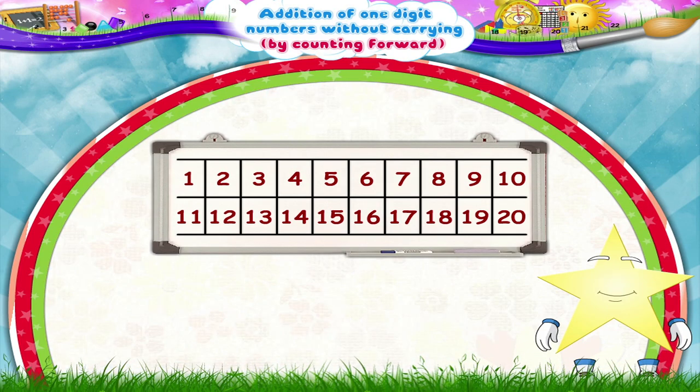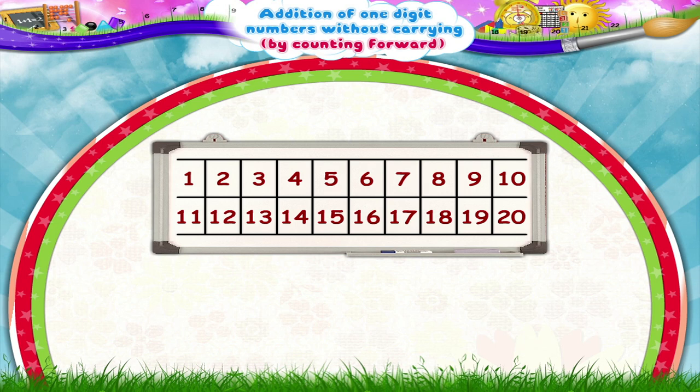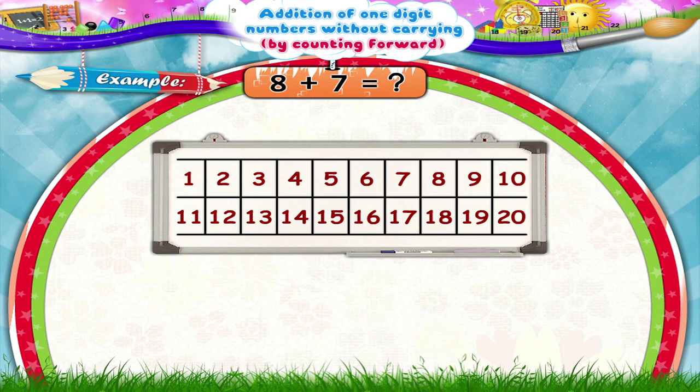Starry, see what we have got here. This is a number square up to 20. We can use it directly to do single digit additions. Do you want to see how? Okay, then let me show you one example.